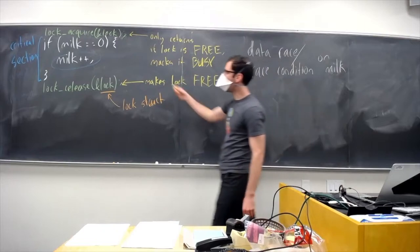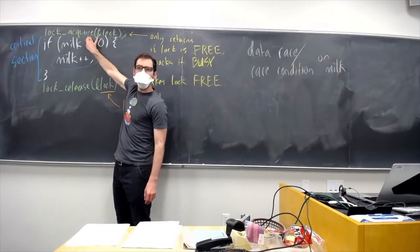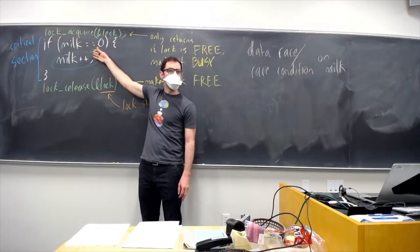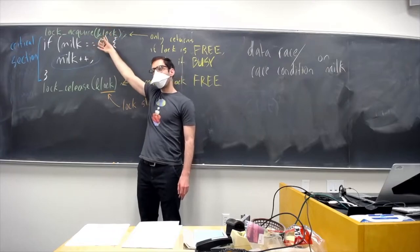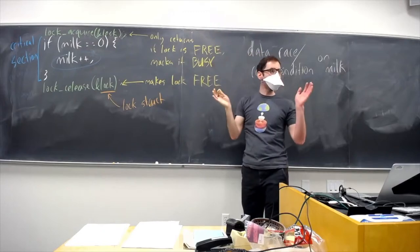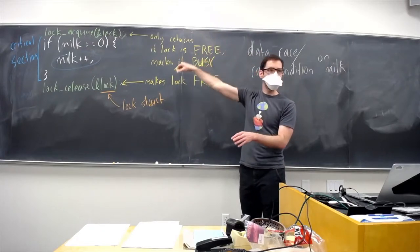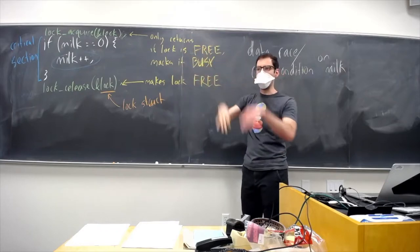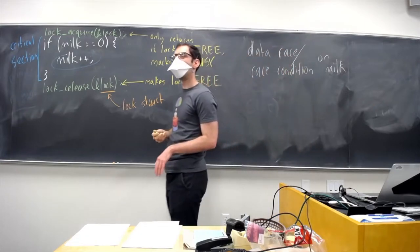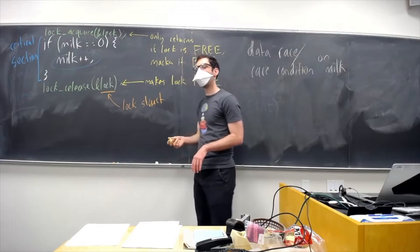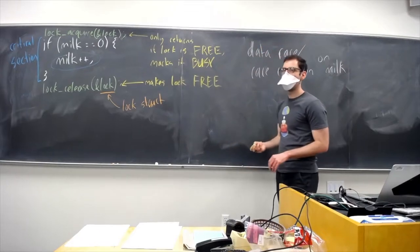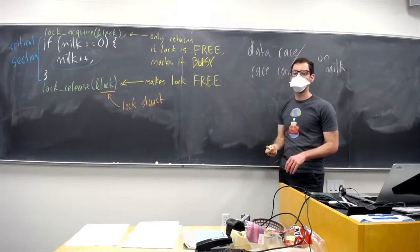A student asks: what stops lock acquire from having the same problem — one thread calls lock acquire, checks if the lock is free, it is, then we switch to another thread who also sees it's free, and both proceed to acquire it. The answer: a lock is a system call so we can safely disable interrupts during it, and it would just be bad lock design if two processes could acquire it at once.